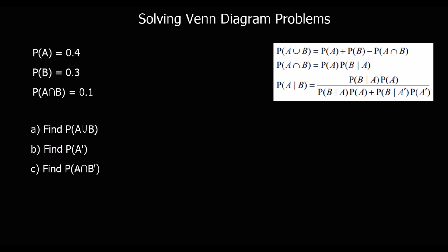In this video, we're going to look at solving Venn diagram problems — drawing some Venn diagrams and answering questions based on them. The ∩ shape means AND, which means these two events, A and B, both happening together.